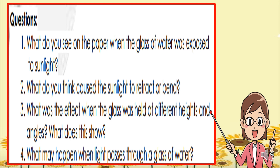Here are the questions to answer after doing the activity. First, what do you see on the paper when the glass of water was exposed to sunlight? Two, what do you think caused the sunlight to refract or bend? Three, what was the effect when the glass was held at different heights and angles? Four, what may happen when light passes through a glass of water?